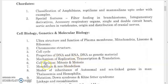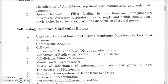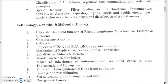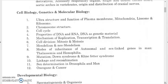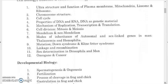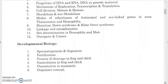Study cell division — mitosis and meiosis — Mendelism and neo-Mendelism, modes of inheritance of autosomal and sex-linked genes in man, thalassemia, hemophilia, and mutations like Down syndrome and Klinefelter syndrome. Down syndrome occurs due to trisomy of chromosome 21. Know the features of each syndrome, the difference between disease and syndrome, and also linkage and recombination, sex determination in Drosophila and man, and oncogenes and cancer.